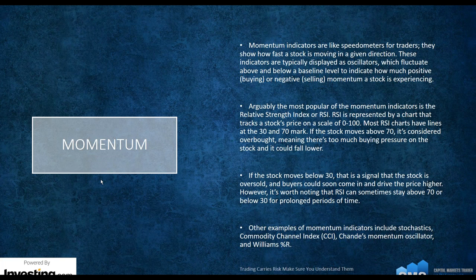Under the momentum category, if an asset moves below 30, that signals the asset is oversold and buyers could come in to drive the price higher. However, RSI can sometimes stay above 70 or below 30 for a long period of time — overbought and oversold indicators can tell you the market is in that condition, but that doesn't mean it can't continue to be overbought. Other examples of momentum indicators include CCI (Commodity Channel Index), Chande's Momentum Indicator, and Williams Percent R.